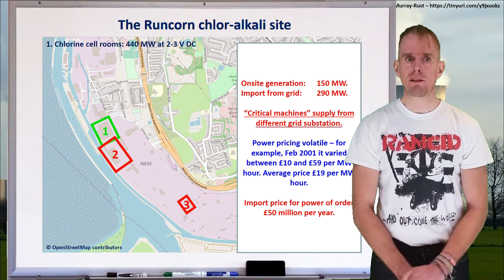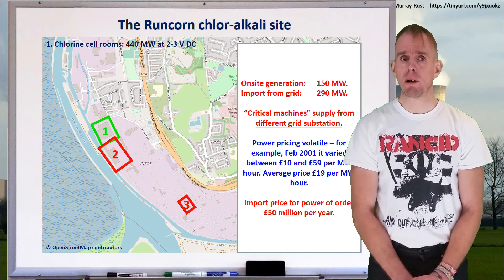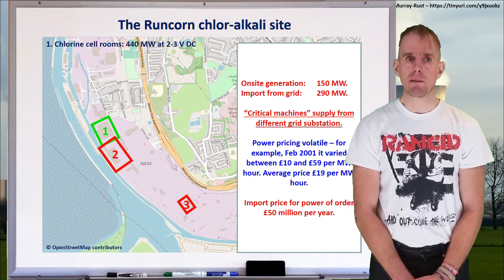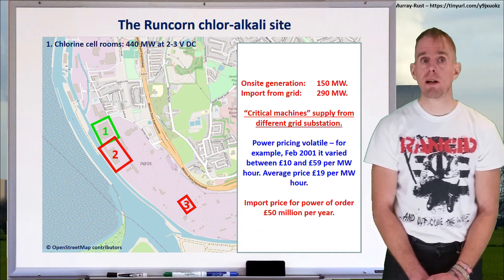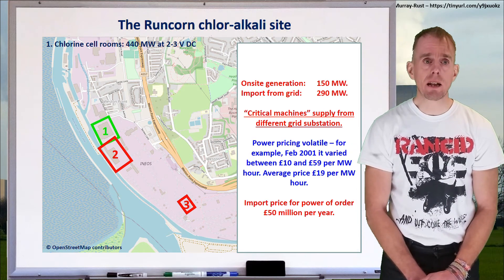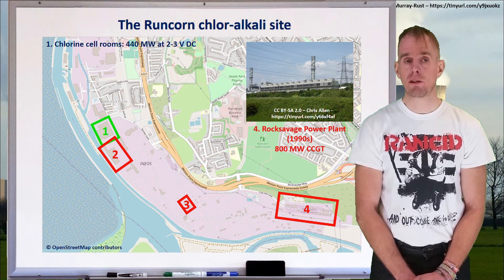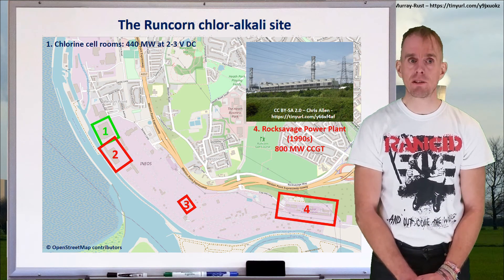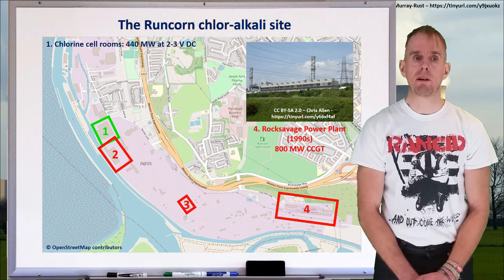Power pricing was the key challenge, being inherently volatile. In 2001, for example, the price of electricity ranged between £10 and £59 per megawatt hour, with an average of about £19 per megawatt hour — making the annual power import bill roughly £50 million. In the 1980s, planning permission for a nuclear power plant on site was refused. But in the late 1990s, a contract was entered with a company called Intergen, who built an 800 megawatt combined cycle gas turbine at the eastern end of the site — the Rock Savage power plant — which still exists today, providing the balance of power to the chlorine cell rooms and exporting the rest to the national grid.